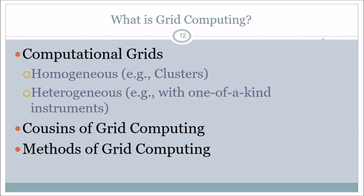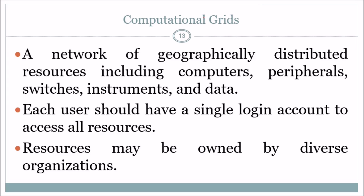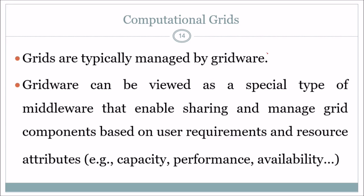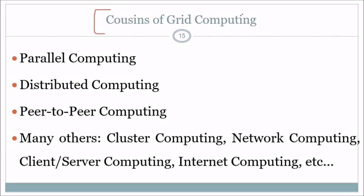Computational grids are a network of geographically distributed resources including computers, peripherals, switches, instruments, and data. Each user should have a single login account to access all resources, and resources may be owned by diverse organizations. Grids are typically managed by gridware — a special type of middleware that enables sharing and manages grid components based on user requirements and resource attributes like capacity, performance, and availability.